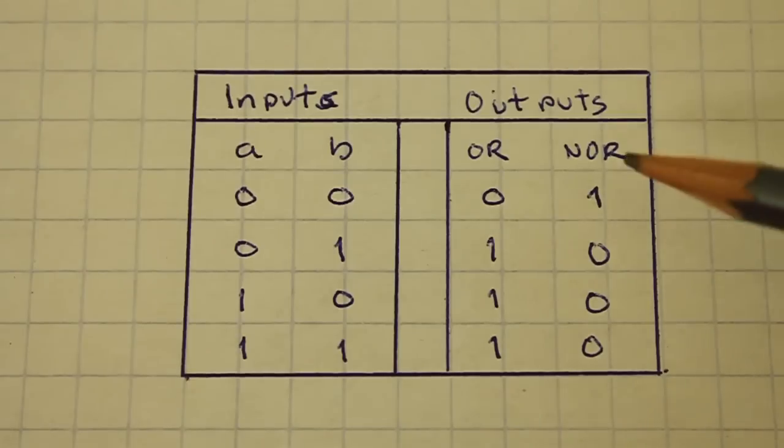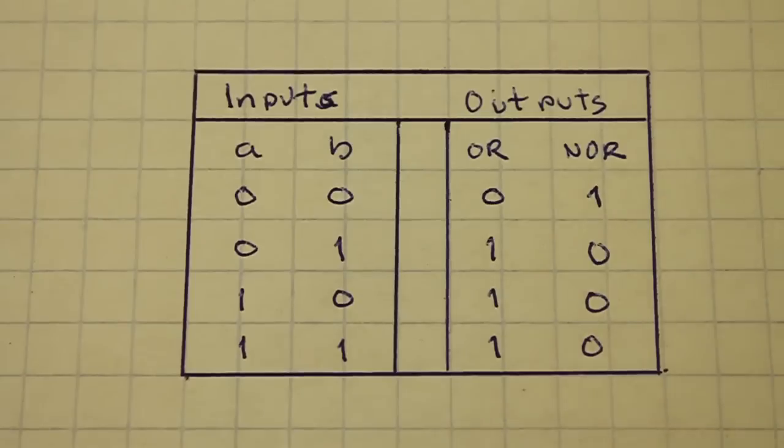For the NOR gate, which is the negative of the OR gate, we have one when both inputs are zero and zero in any other case.